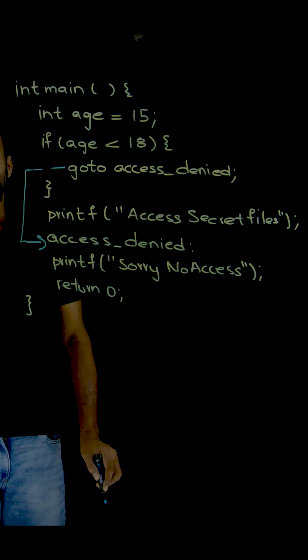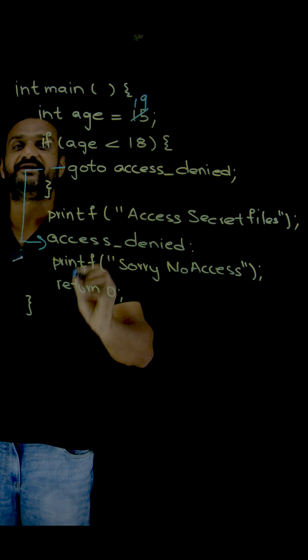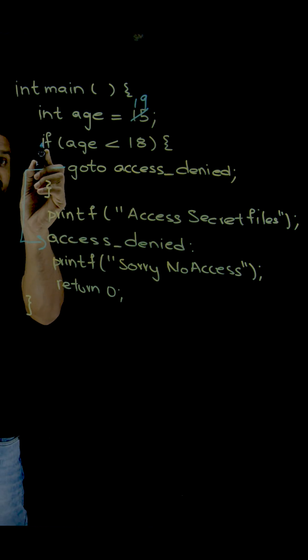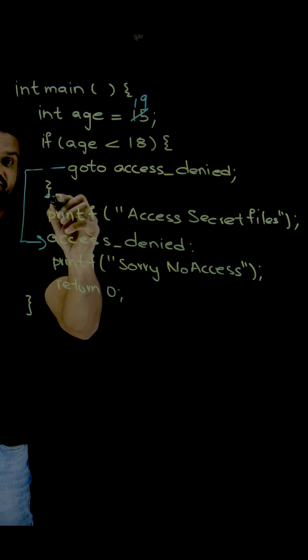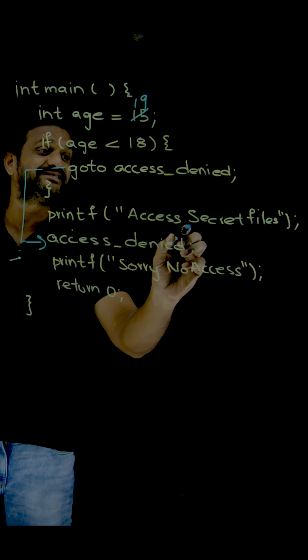Let's assume that the age is 19 now. What happens? This if statement is going to be false, so this printf statement will get executed: printf access secret files.